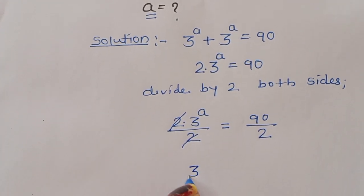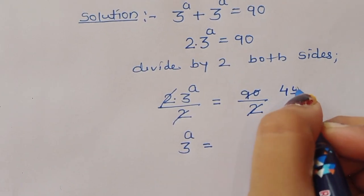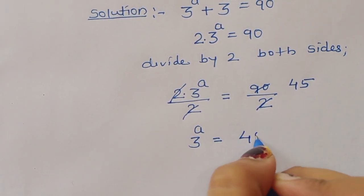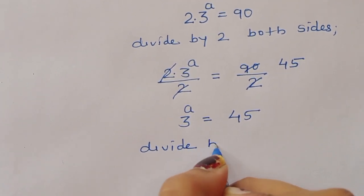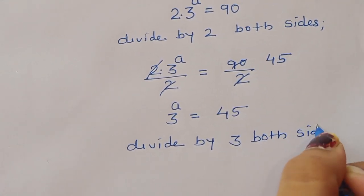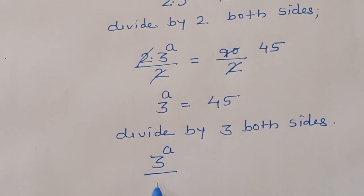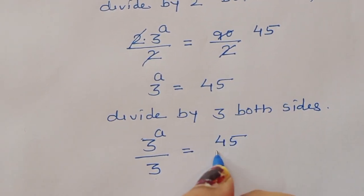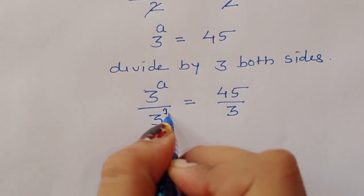So 3 power a is equal to 45. Now again we can divide by 3 on both sides: 3 power a divided by 3 is equal to 45 divided by 3. This is 3 power 1, so we can write it as 3 power 1.